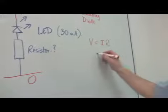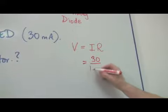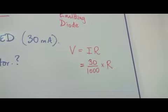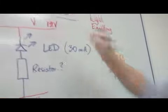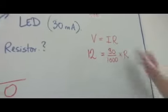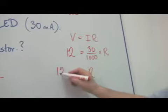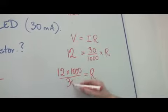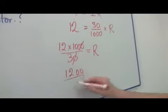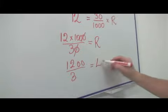If the current you want is 30 milliamps, that's 30 over 1,000 amps, multiplied by the resistance. Let's say I'm using a 12 volt supply, like a car battery. So by rearranging this equation, I'll get 12 times 1,000 over 30. And if we cancel it down, it's 1,200 over 3, which gives us a resistance of 400 ohms.